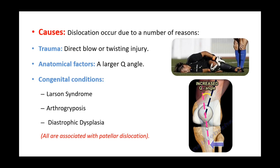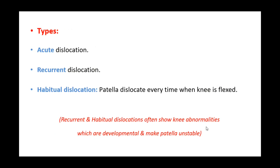Some congenital conditions like Larsen syndrome, arthrogryposis, and diastrophic dysplasia are also associated with patella dislocations, as they promote joint laxity and result in dislocation of the patella. We usually classify dislocations into three types: acute dislocation, recurrent dislocation, and habitual dislocation.